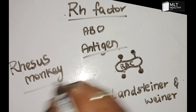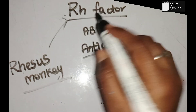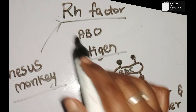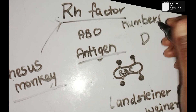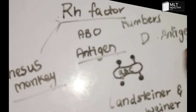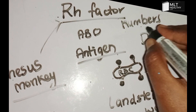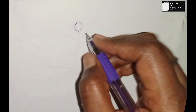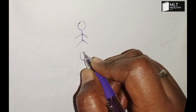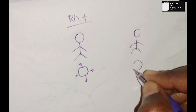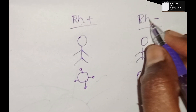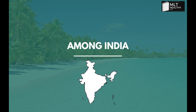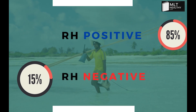The Rh factor was first discovered using Rhesus monkeys. The most important antigen in the Rh group system is the D antigen. In India, 85% of the population is Rh positive, and only about 15% of the people are Rh negative.